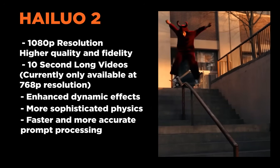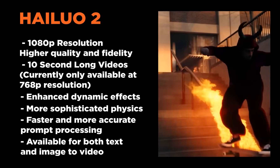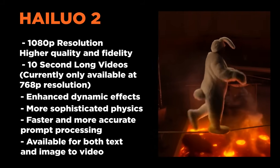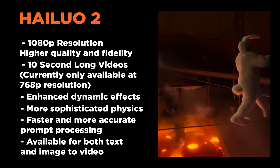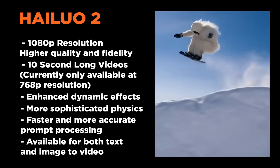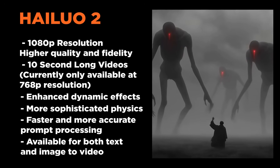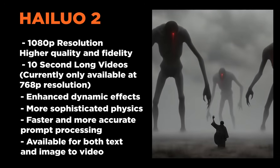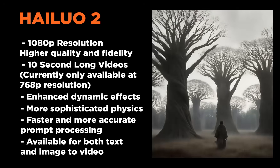At the moment, you can use Hilo 2 with text-to-video and image-to-video. The only feature where you can't use Hilo 2 is subject reference, which allows you to do one-shot character consistency. But I do have a workaround for this, which I'll show you in the video, where you can still generate an image with character consistency and then bring it to life using Hilo 2. Anyway, those are the main updates for this video model.